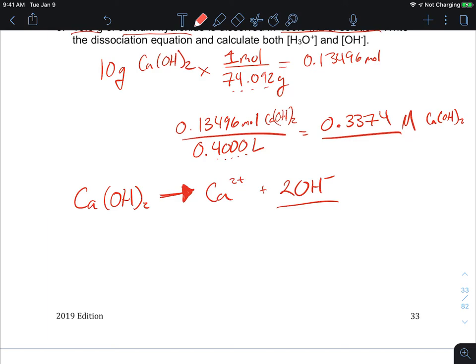So I have for however much I have here, I have 0.3374 molar here, then I have 0.6748 molar here because it's a one-to-two ratio. Now I have the molarity of the hydroxide, so now I can calculate the concentration of H plus by doing Kw divided by the concentration of OH is going to be equal to the concentration of my hydronium concentration. So 1.0 times 10 to the negative 14 divided by 0.6748.